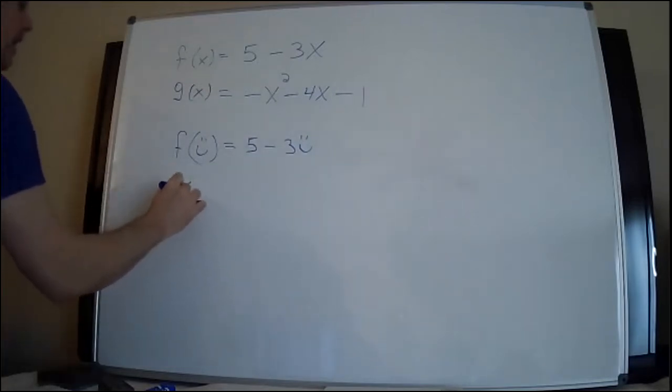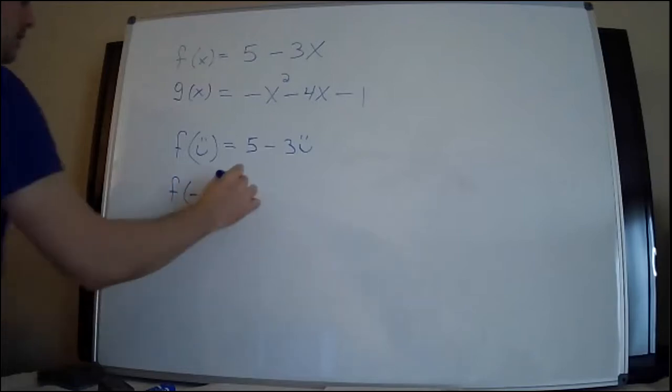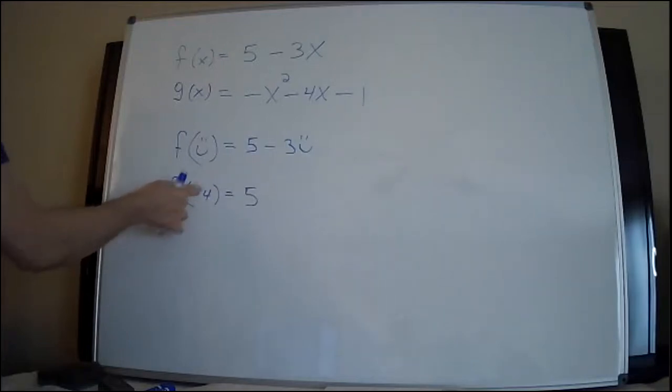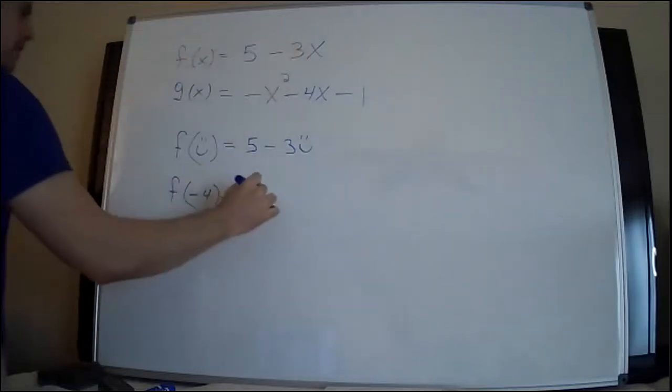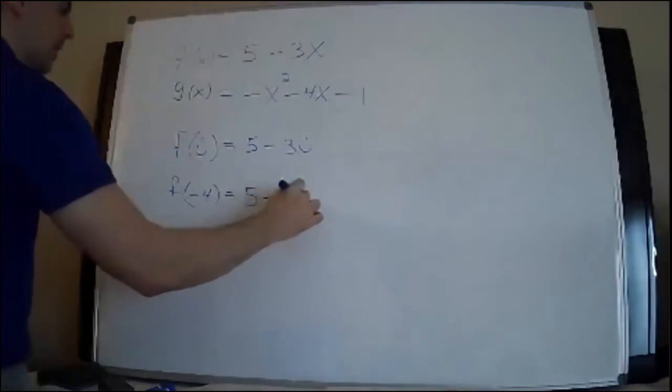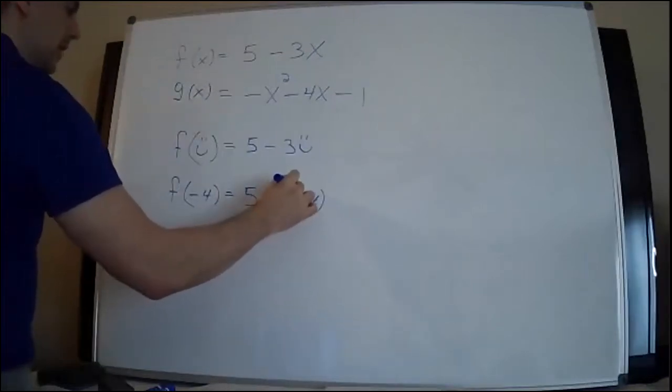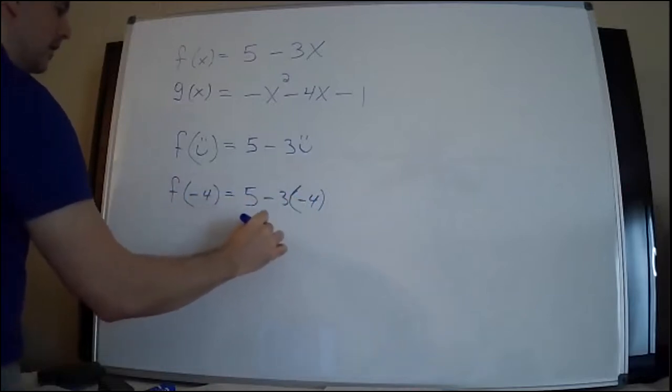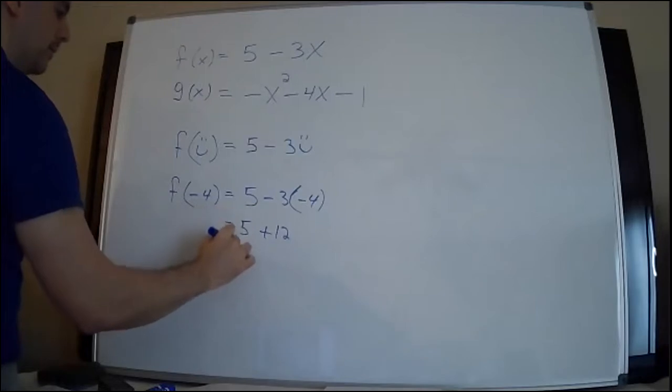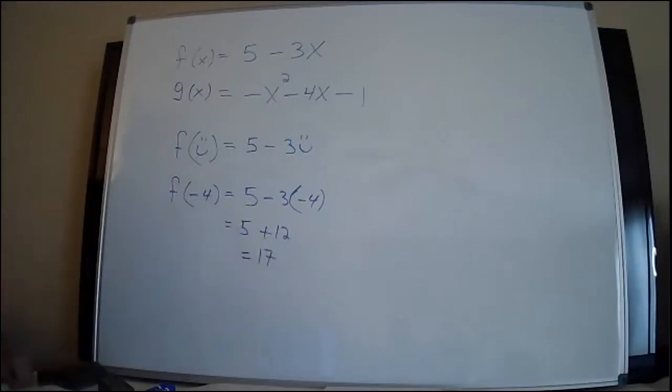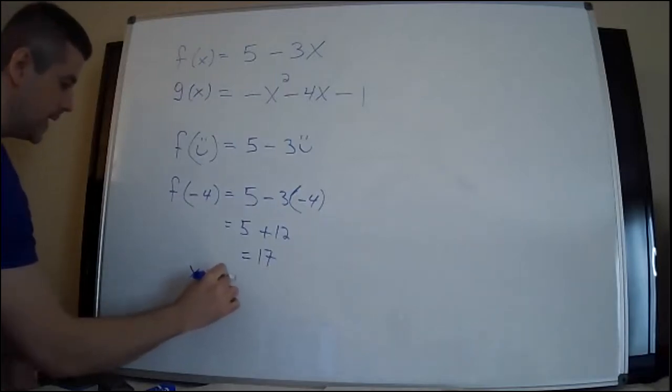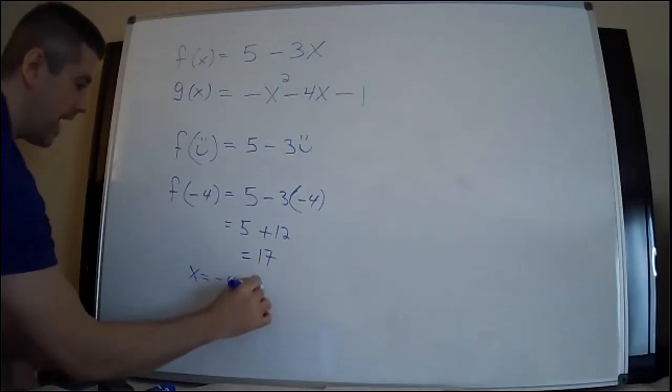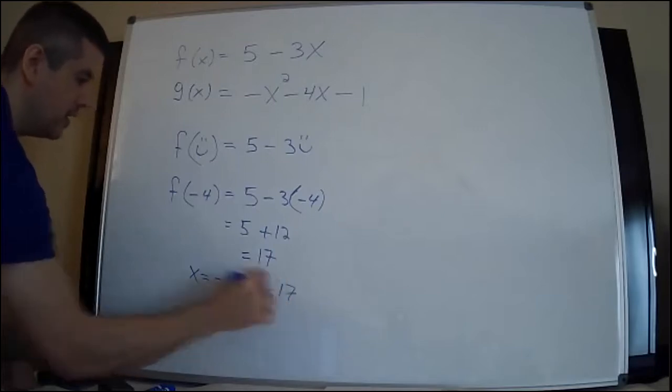If I wanted to do F of -4, wherever the x is, you put that number. Negative and negative is plus. Three times four is 12. So 5 + 12 = 17. Now what does it mean? It means that I put x equal -4 into my function F, and I got 17.